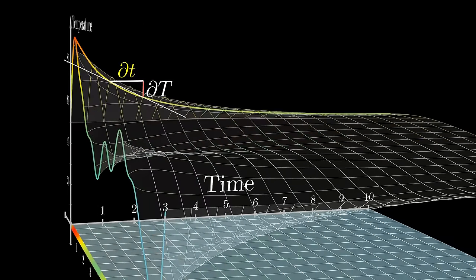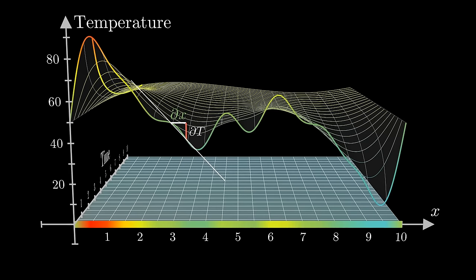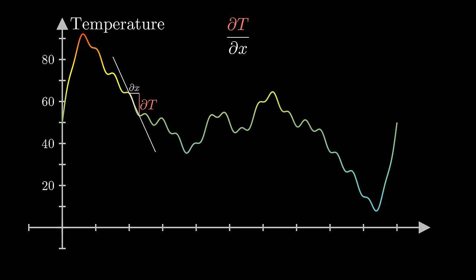And remember, there are two separate rates of change at play. How does that temperature change as time progresses, and how does the temperature change as you move along the rod? The core intuition remains the same as what we had in the discrete case. To know how a point differs from its neighbors, look not just at how the function changes from one point to the next, but at how the rate of change itself changes.